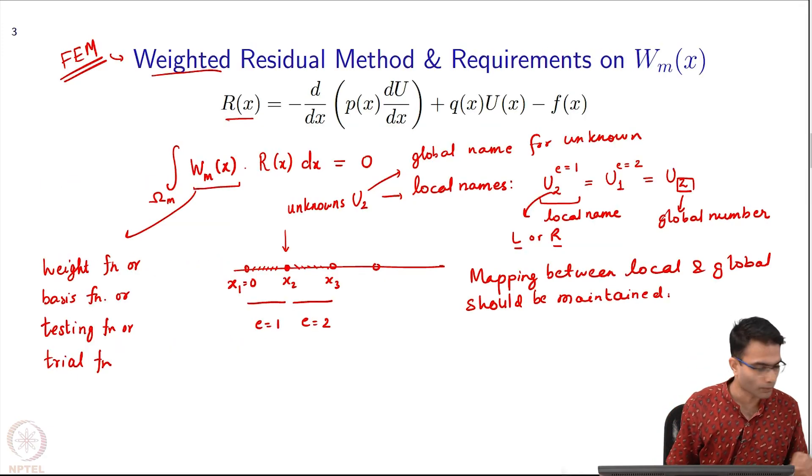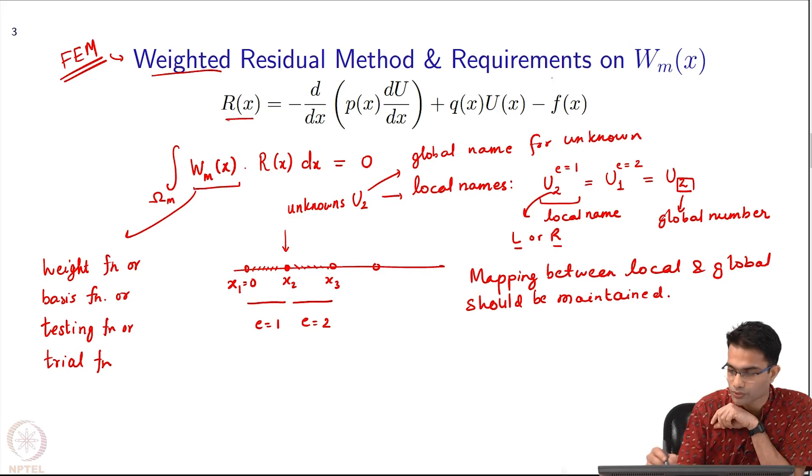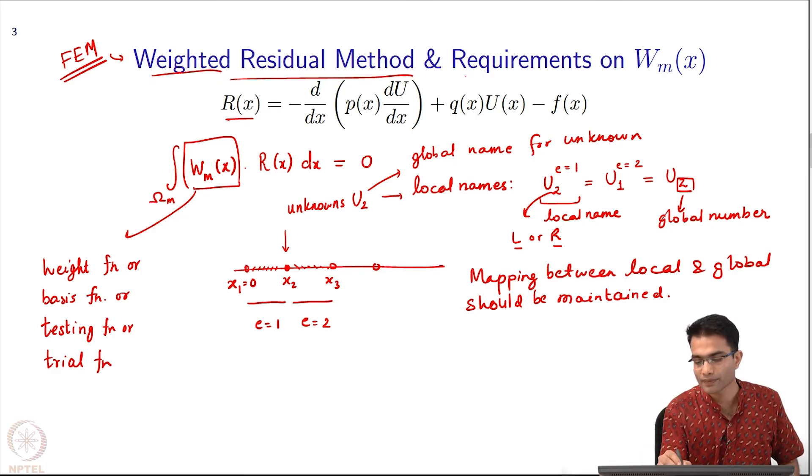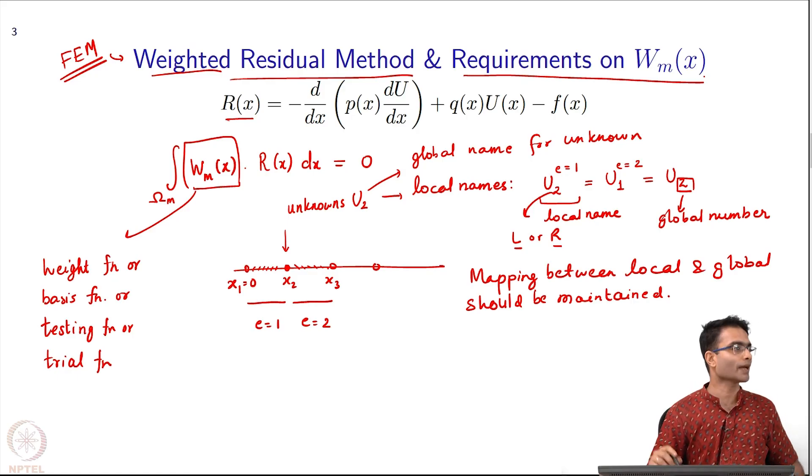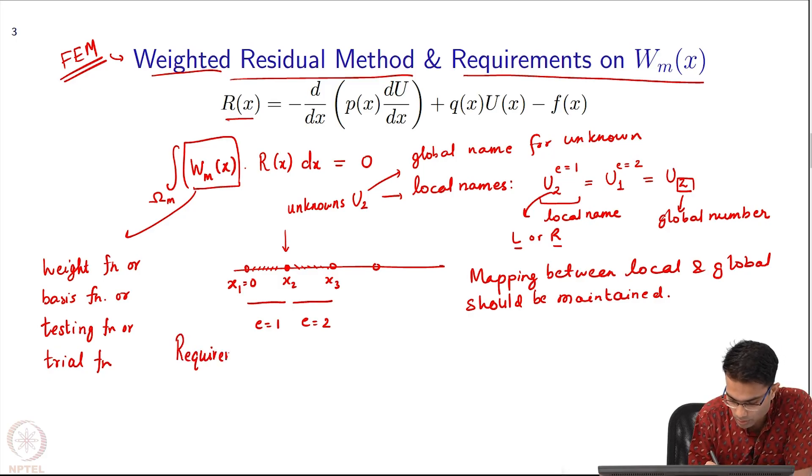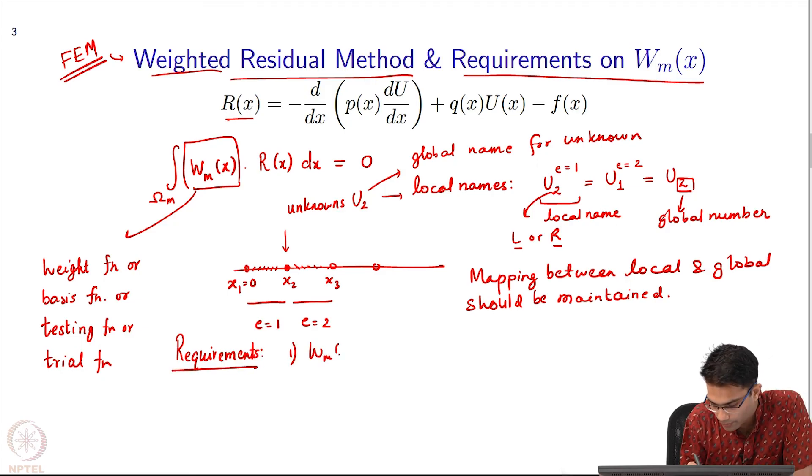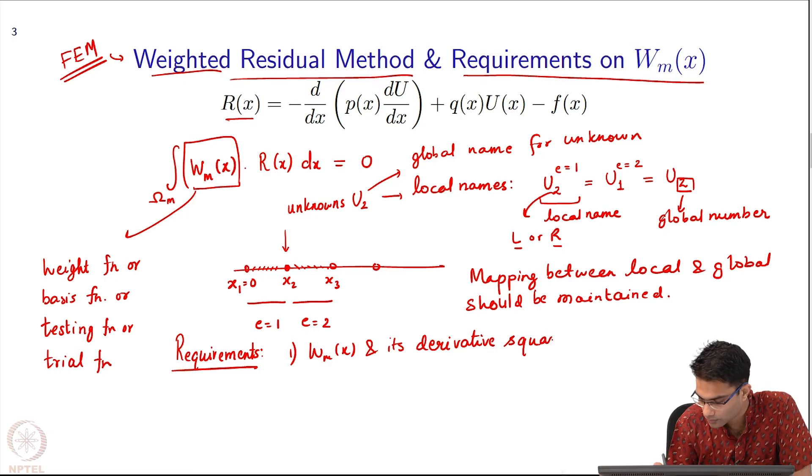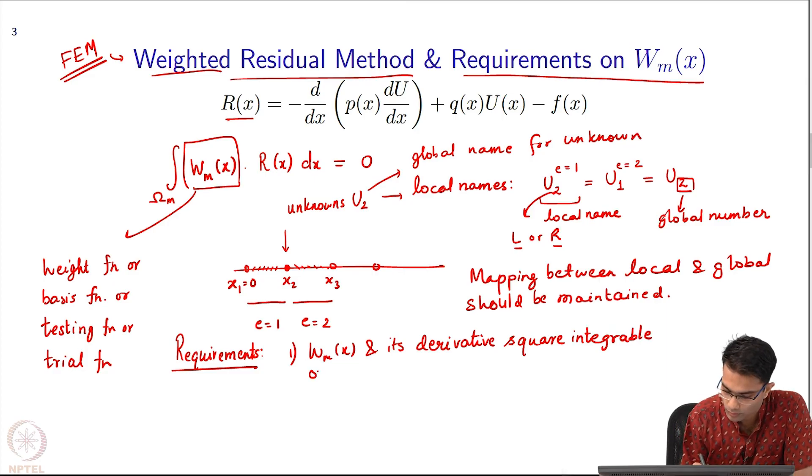Now, one thing I want to mention over here about the choice of these W. Over here we did not impose any requirements on W_m so far. What I spoke about so far was the weighted residual method. I will briefly mention what are the requirements on W_m. Can W_m be anything? For example, can it be a pulse basis function or something like that? At the very minimum there are 2 requirements on W_m. W_m of x and its derivative, these should be square integrable over the domain.